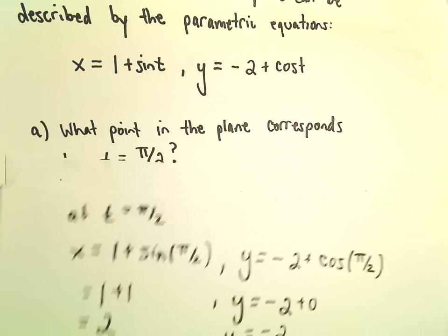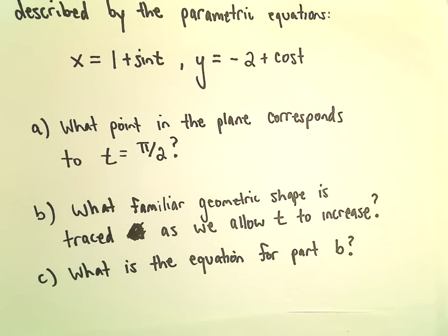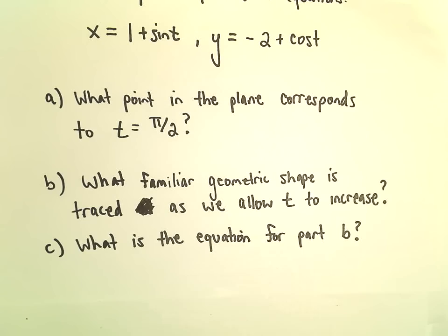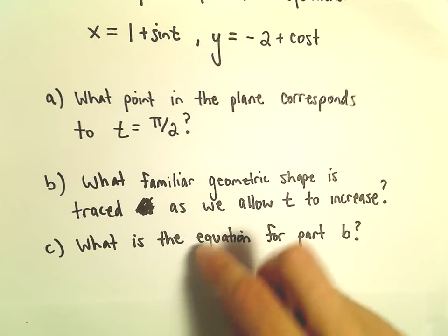All right, easy enough. Just a matter of plug and chug. Part B says, what familiar geometric shape is traced out as we allow t to increase?